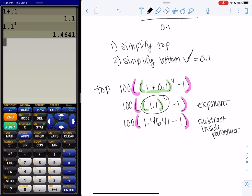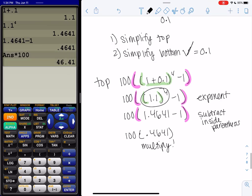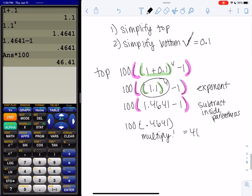And then we're almost done. So 1.4641 minus 1, and then 0.4641. And then you can write a times sign or the parentheses. Both mean multiply. So we just multiply. We get 46.41.